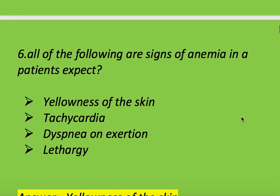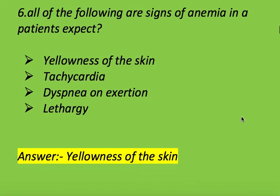All of the following are signs of anemia in a patient except which one? Options: yellowness of the skin, tachycardia, dyspnea on exercise, and lethargy. Right answer is yellowness of the skin. Yellowness of the skin is not a sign of anemia.